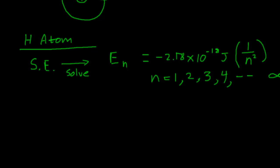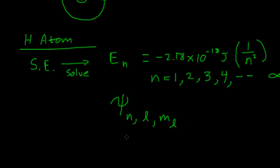The Schrödinger equation also gives us these wave functions, which depend on what the energy is. They have the number n associated with them, but also two other special numbers: a script L and a number called M-sub-L. So we have n, L, and M-sub-L. These taken together are like little labels that tell you which wave function to use — they come out of the mathematics of solving the equation. N here is the same n used in the energy formula.